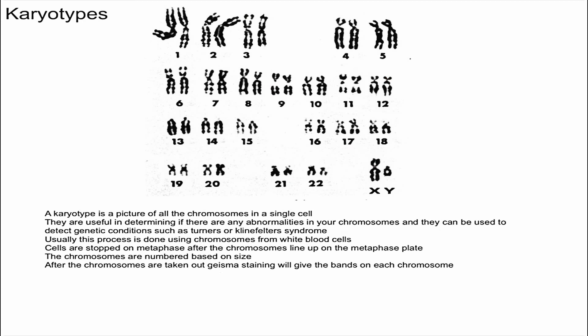One last thing — as you can see, the chromosomes decrease in size as the number gets larger, so chromosome number one is the biggest and chromosome 22 is the smallest. Chromosomes are numbered based on their size. That pretty much sums it up for this video about karyotypes. I hope you found it useful — if you did, please give it a like and subscribe if you want to see more videos like this.